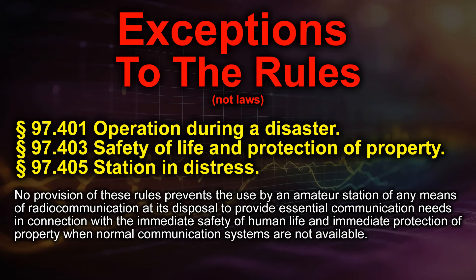Just like any other set of rules, sometimes there are exceptions. With Part 97, you have subsections 401, 403, and 405. Section 401 deals with operation during a disaster; 403 covers the safety of life and protection of property; and 405 covers a station in distress. So if you're in a disaster scenario with a threat to life and property, a lot of the rules fly out the window — down to no provision preventing any use of radio communication to provide essential needs in connection with immediate safety of human life.